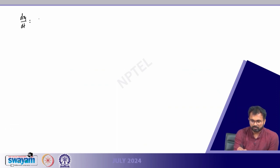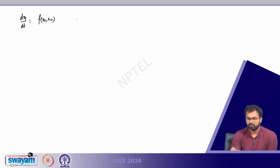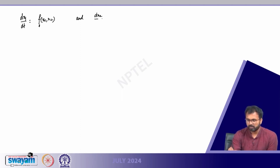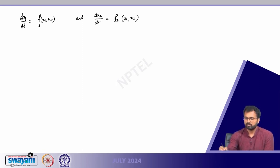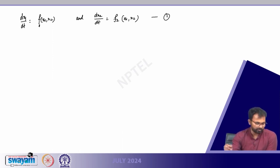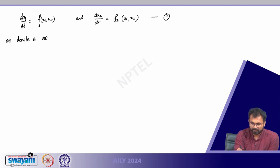We have the same system: dx1/dt equals f1(x1, x2) and dx2/dt equals f2(x1, x2). There are initial conditions but at the moment we are not focused on them. We denote a variable point in the plane by x = (x1, x2).